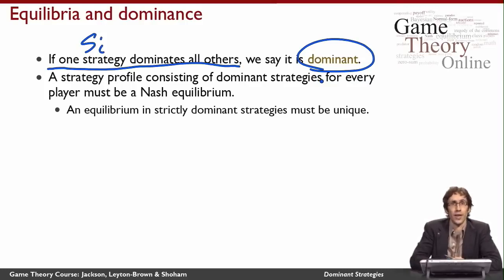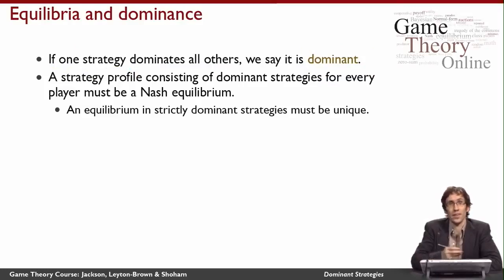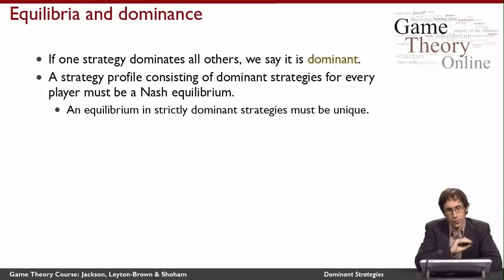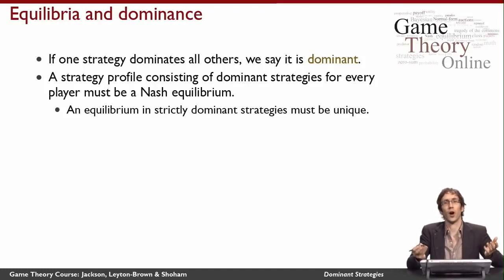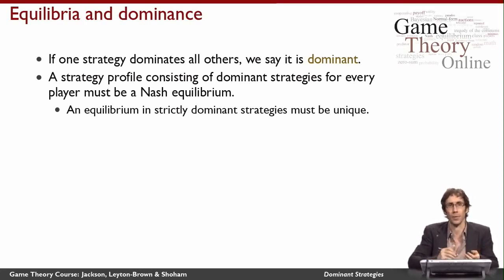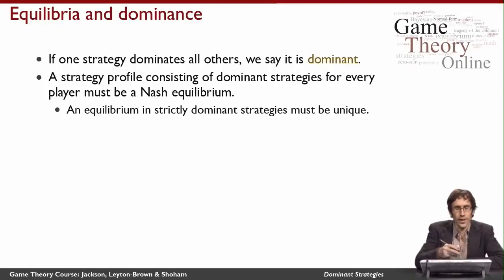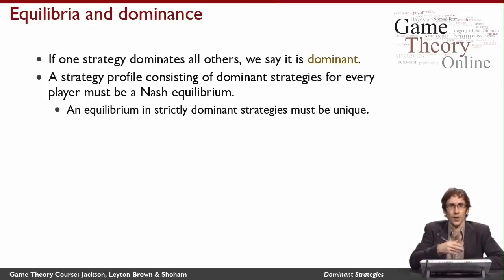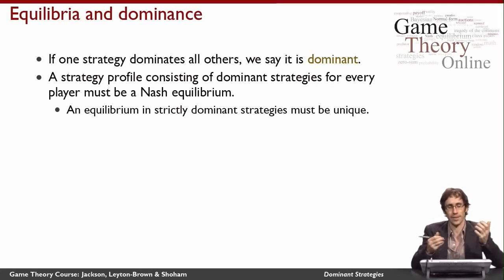I can just play my dominant strategy, and that's going to be the best thing for me to do. Formalizing that notion, a strategy profile in which everybody is playing a dominant strategy has to be a Nash equilibrium, because none of us wants to change what we're doing — we already know from the fact that the strategy is dominant that there's nothing better to do. Furthermore, if we all have strictly dominant strategies, then this equilibrium has to be unique, because there can't be two equilibria with strictly dominant strategies, as that would mean we prefer those strategies to each other strictly, and that just can't happen.